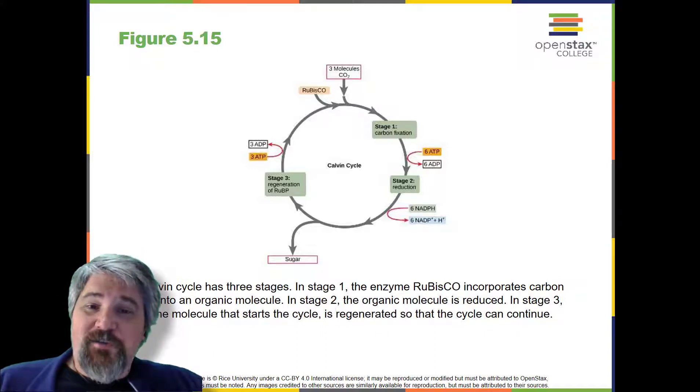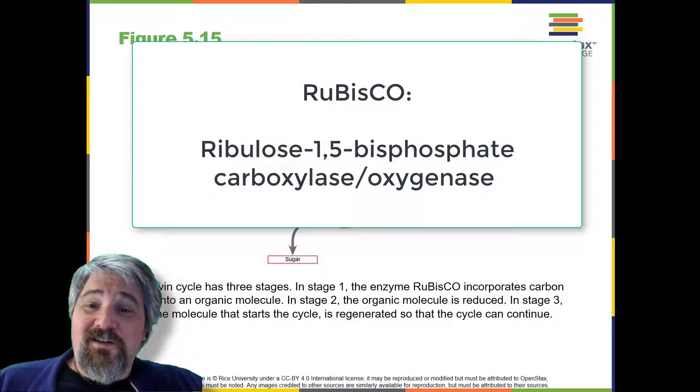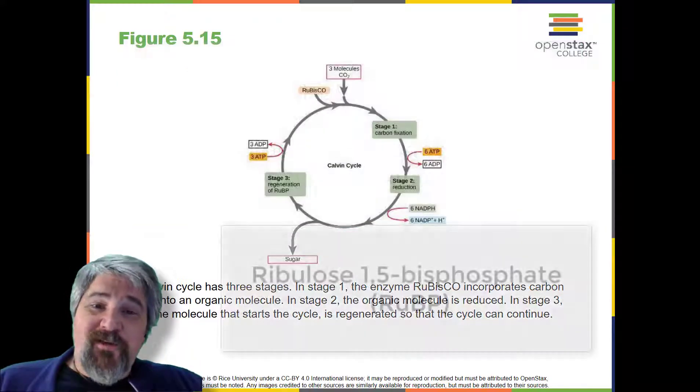In the stroma, in addition to CO2, two other chemicals are present to initiate the Calvin Cycle: an enzyme abbreviated RuBisCO, and the molecule ribulose bisphosphate.